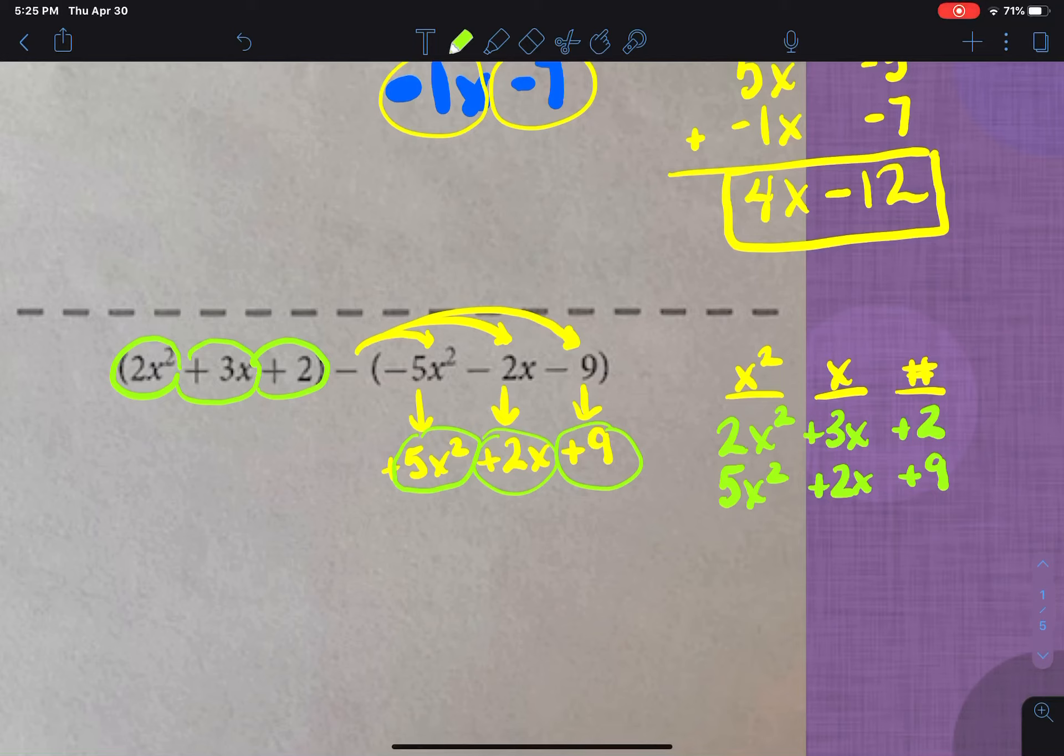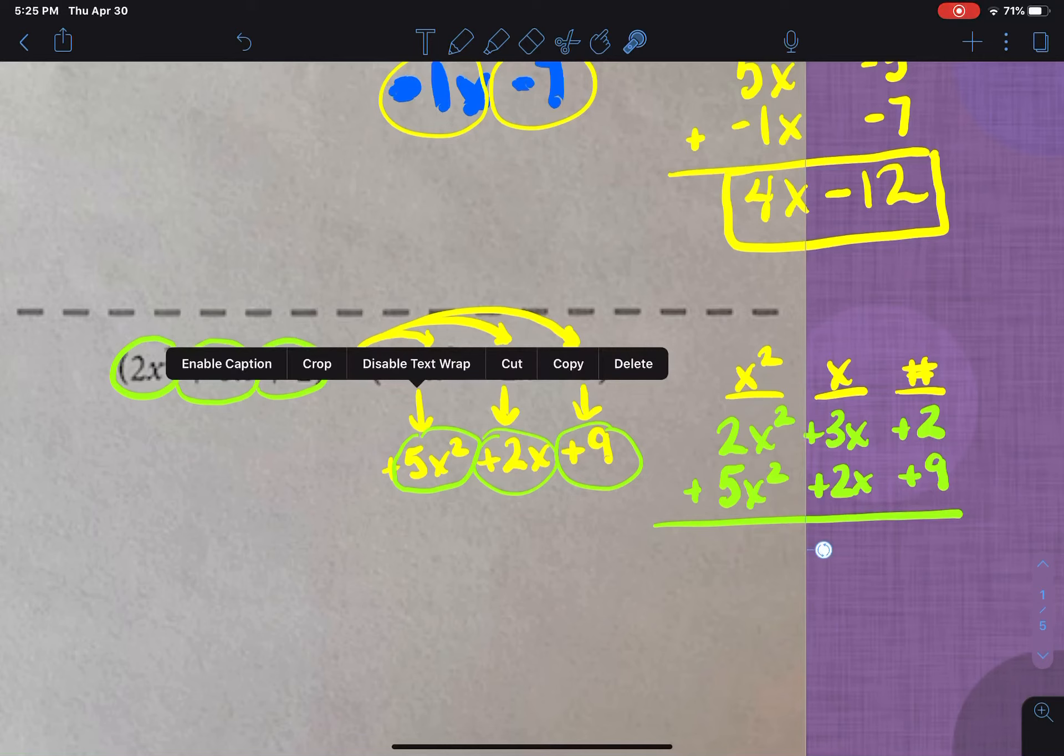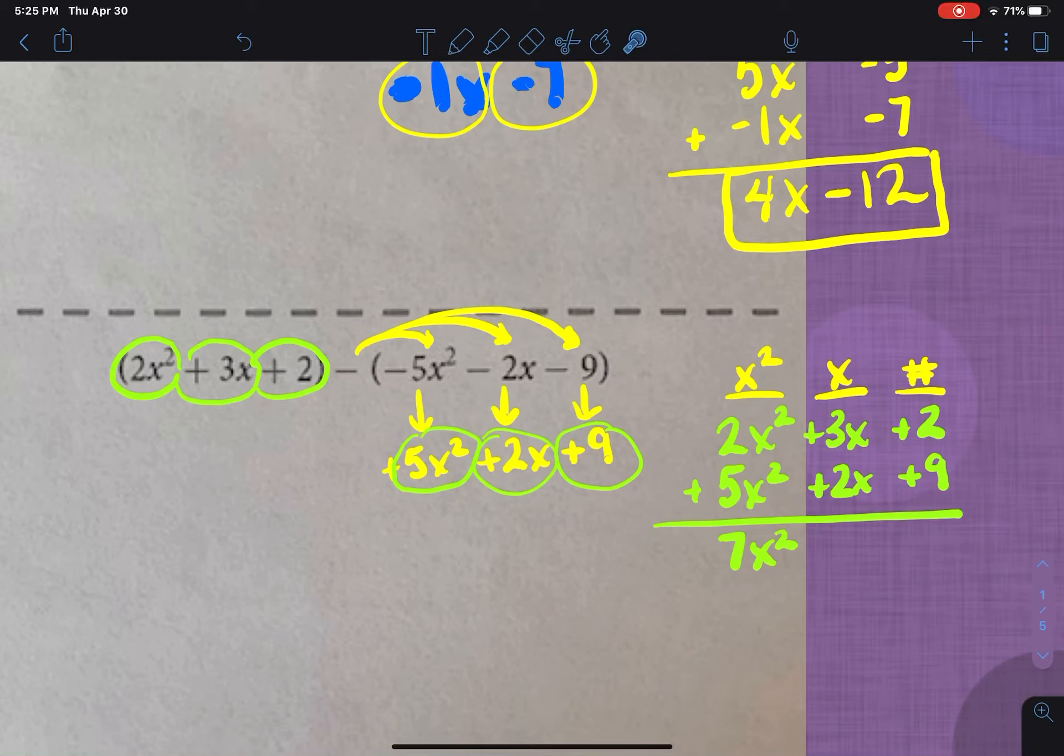And now we're going to go through and just total them. So if I do my plus sign here and draw my line. So now I'm going to start to total. So in this column, I have positive 7x squared. In this column, I'm going to have positive 5x. And in this column, I'm going to have positive 11.